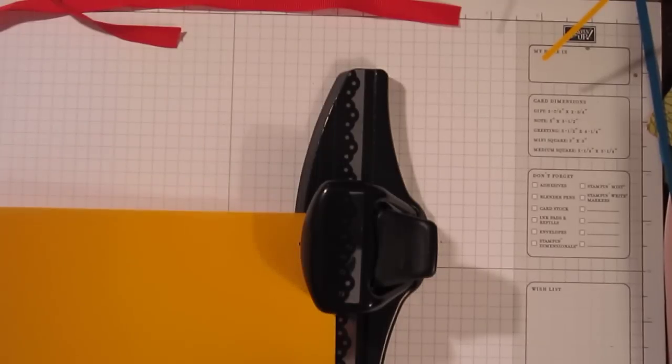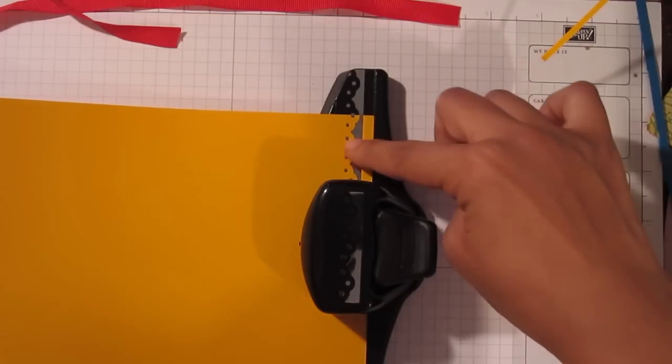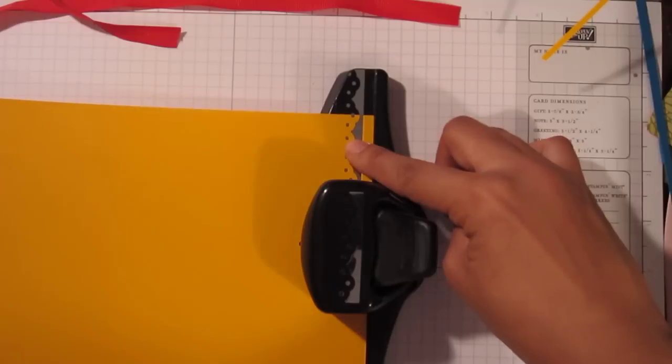And then you also have this guide here so you can line up your paper that you've already punched with that. So you have two guides. The one that keeps the paper straight and the one that lines up the design so you don't over punch.